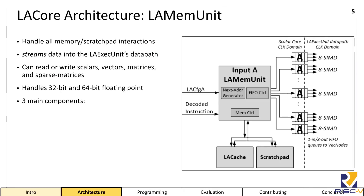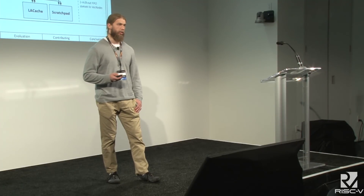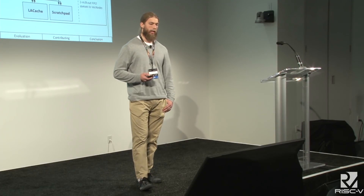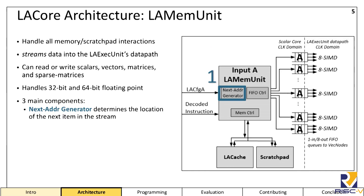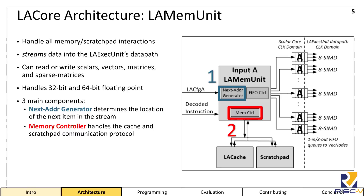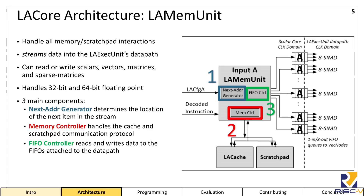The second architectural feature is the LA mem unit, which handles all the memory and scratch pad accesses and transfers data between the LA exec unit through FIFOs. The LA mem unit is highly configurable and can read or write a variety of single or double precision data streams, including scalars. It supports generalized vectors through a gather-scatter interface, and it has native hardware support for sparse matrix formats. The LA mem unit is composed of three main pieces: the next address generator, which tells the internal memory controller where the next address is located; the internal memory controller, which handles all the bus protocol with the LA cache and scratch pad; and the FIFO controller, which reads and writes data to the FIFOs connected to the LA exec unit's data path.